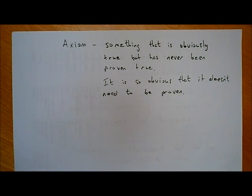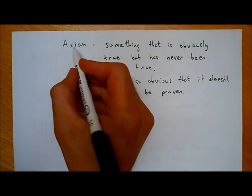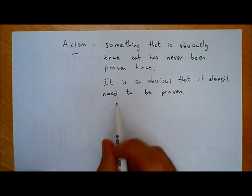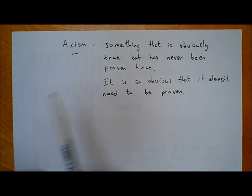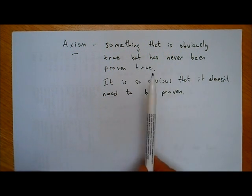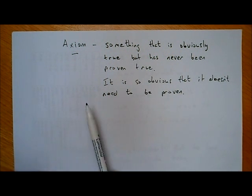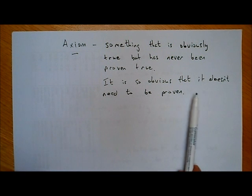I want to have a look at a few simple definitions in this video. The first one is the definition of an axiom. An axiom is something in maths that is obviously true, but it has never been proven to be true. It's so obvious that it doesn't need to be proven.